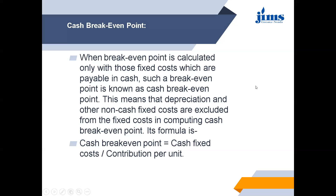Next is cash break-even point. When the break-even point is calculated only with those fixed costs which are payable in cash, such a break-even point is known as the cash break-even point. Depreciation and other non-cash fixed costs are excluded from fixed costs when computing the cash break-even point, because in depreciation there is no actual outflow of cash. The formula to calculate cash break-even point is: cash fixed cost divided by contribution per unit. For a simple break-even point, the formula is fixed cost divided by contribution per unit.